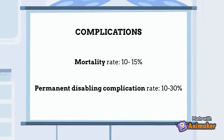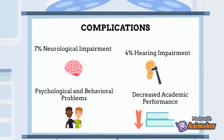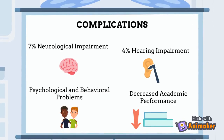Regarding the complications, meningococcal disease has a mortality rate of 10–15%, meaning around 1 in 10 individuals who develop invasive meningococcal disease will die. Individuals who survive also face high rates of complications, with 10–30% facing permanent disabling complications depending on the clinical syndromes that occur. Overall, there is around a 7% rate of neurological impairment, which can include seizures and spasticity, and a 4% rate of hearing impairment. In children who survive meningococcal disease, they have higher rates of behavioral and psychological problems and also decreased academic performance.